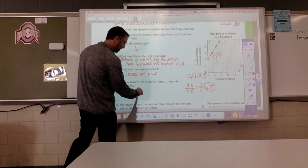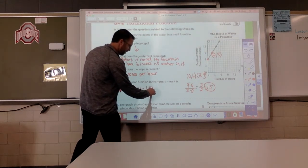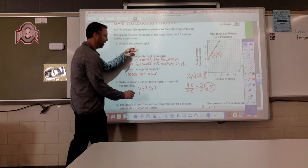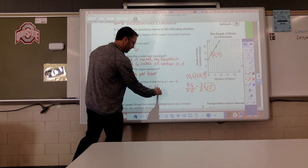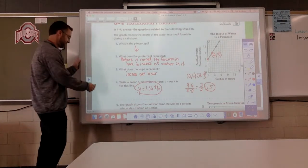So, write the linear function. Y equals, there's my slope, 1 and a half, plus my y-intercept. I started with 6 inches of water. Good stuff. Let's move on.